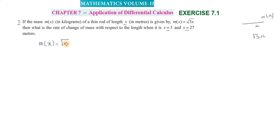So m(x) = √(3x) = √3 · √x = √3 · x^(1/2). We can write this as √3 times x to the power 1/2.